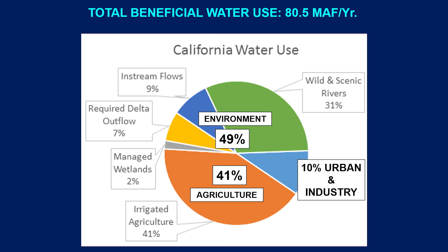A couple of areas below the delta and in central California, circled in red, are isolated in terms of hydrological connection and are mostly dependent on groundwater where it is available.